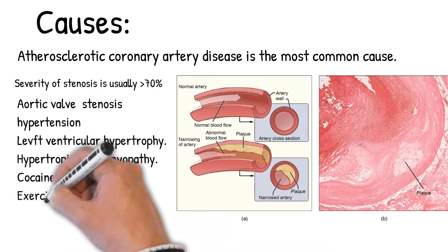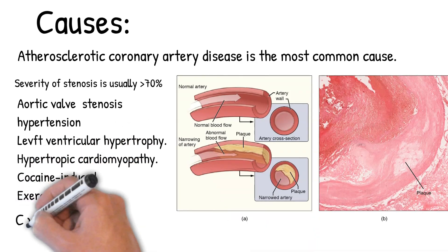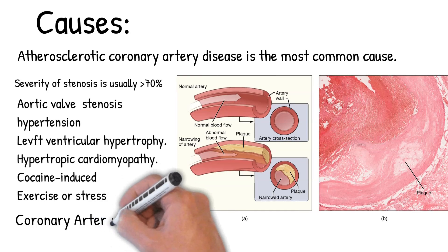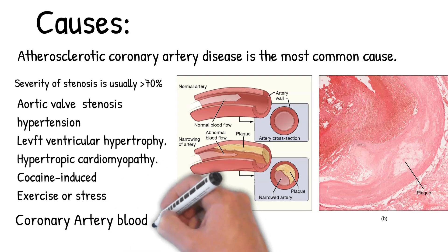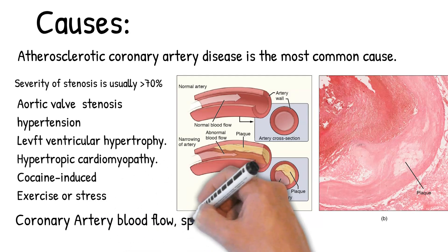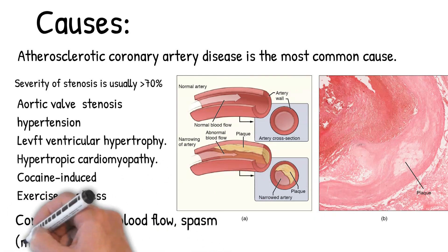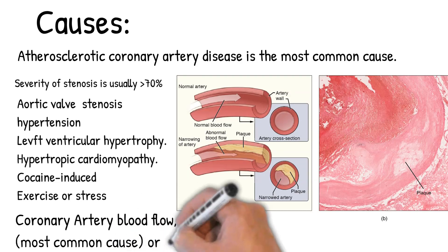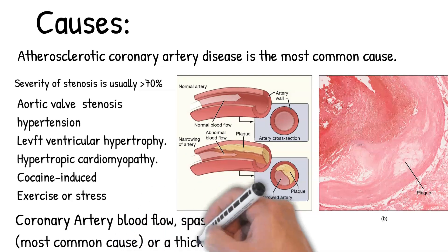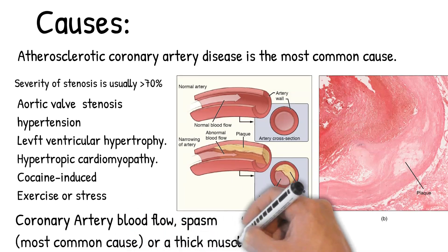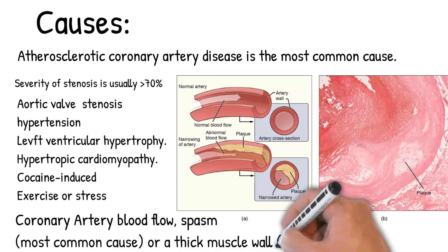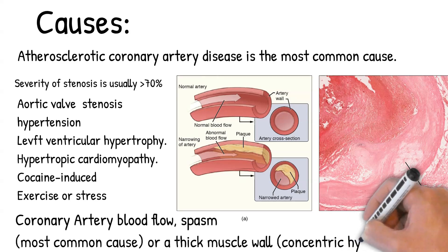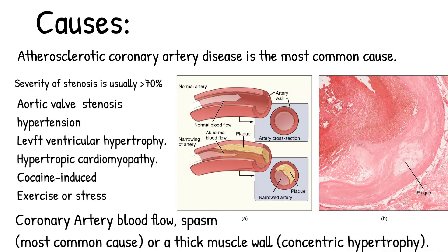Pathogenesis includes subendocardial ischemia caused by decreased coronary artery blood flow or spasm, which is the most common cause, or a thick muscle wall due to concentric hypertrophy. In other words, angina is usually due to obstruction or spasm of the arteries that supply blood to the heart muscle.